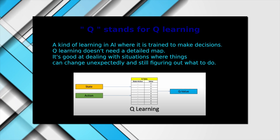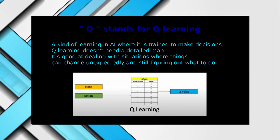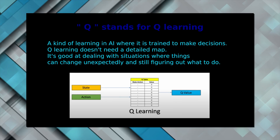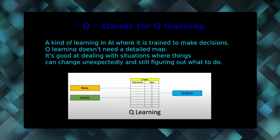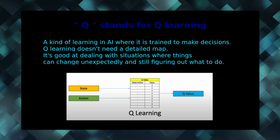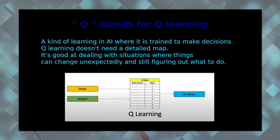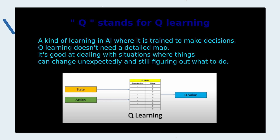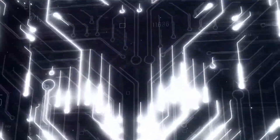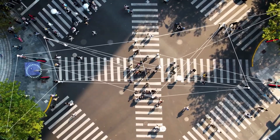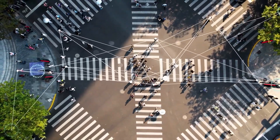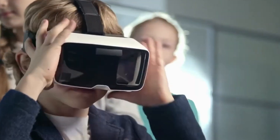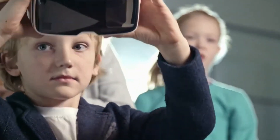Let's break down the name QSTAR. It combines two important ideas from computer science and AI. The first part, Q, stands for Q-Learning. This is a kind of learning in AI where it is trained to make decisions — like teaching someone to follow certain rules or strategies. Unlike other methods, Q-Learning doesn't need a detailed map of the environment it's working in, and it's good at dealing with situations where things can change unexpectedly.